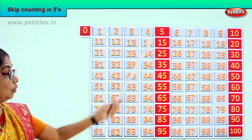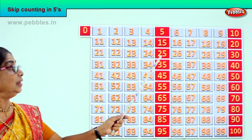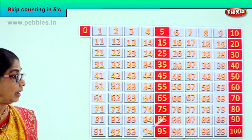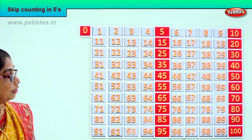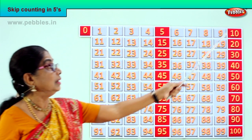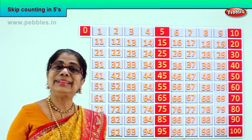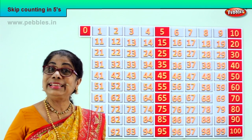And here you have all the fives. Look at the beautiful pattern: five, fifteen, twenty-five, thirty-five, forty-five, fifty-five, sixty-five, seventy-five, eighty-five, ninety-five. So the pattern is: all zeros, then all the fives, then all the tens. This is the beautiful pattern. Now we have learned skip counting in fives!